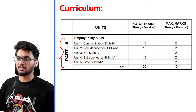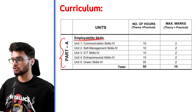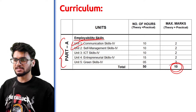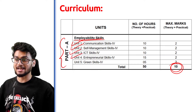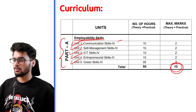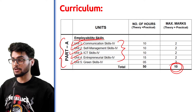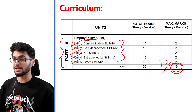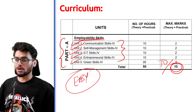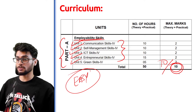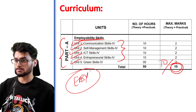Let's look at the curriculum. Part A — you might be familiar with the employability skills, which carry 10 marks: communication skills, self-management skills, ICT skills, entrepreneurial skills, and green skills. You might think these are not important, but they actually are quite important because you can definitely score 10 out of 10 since they are very easy. You can wait for sessions to come up on this channel — I'll be posting for all of them — and you can also practice a couple of questions which are already present in your textbooks.